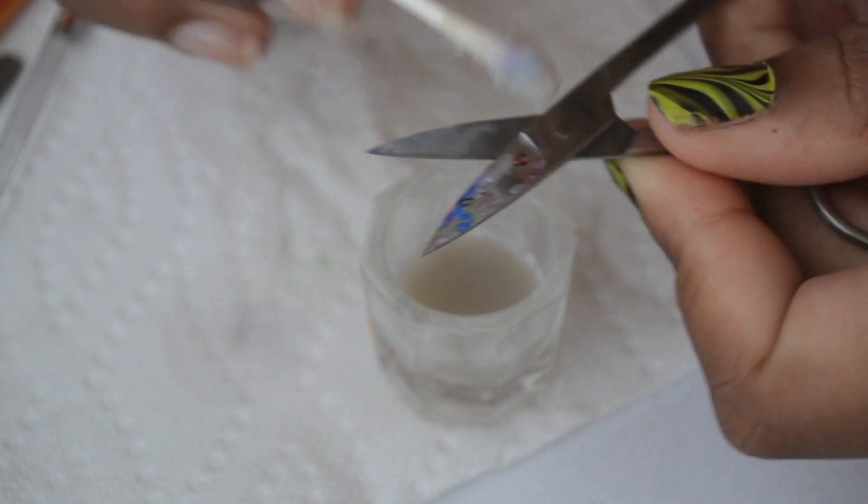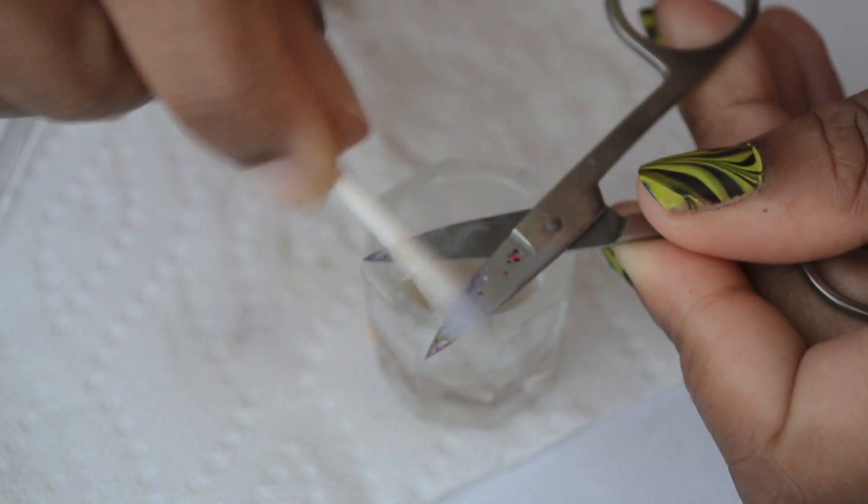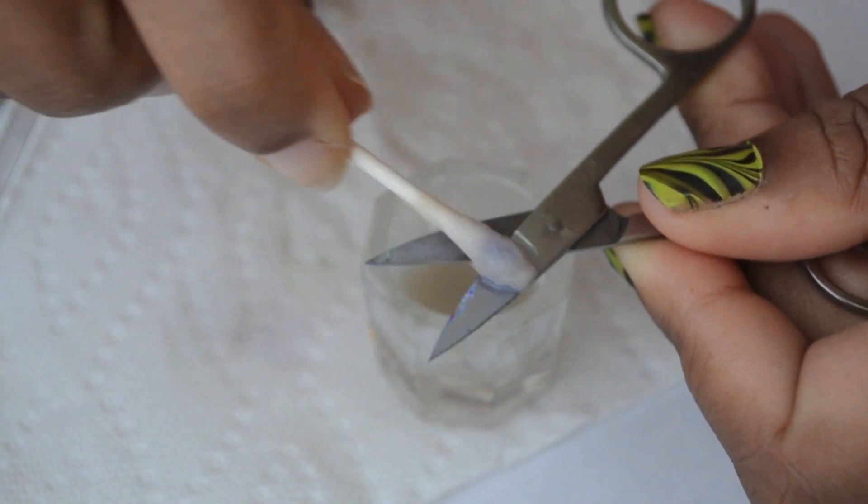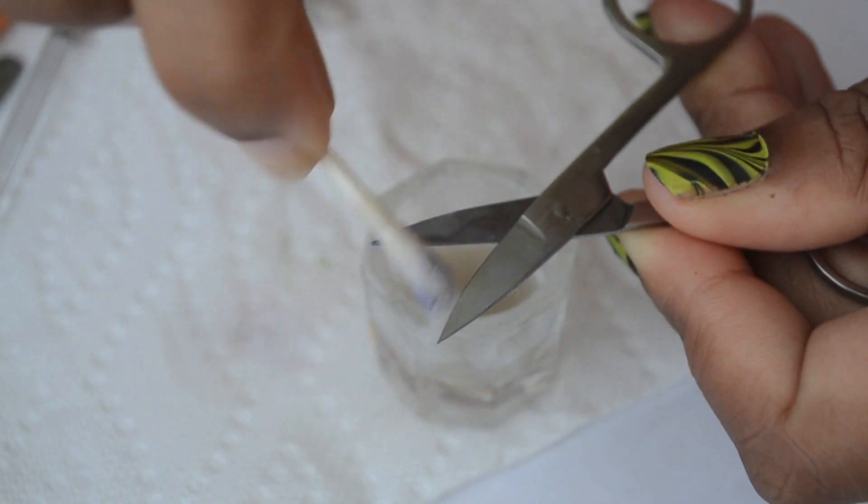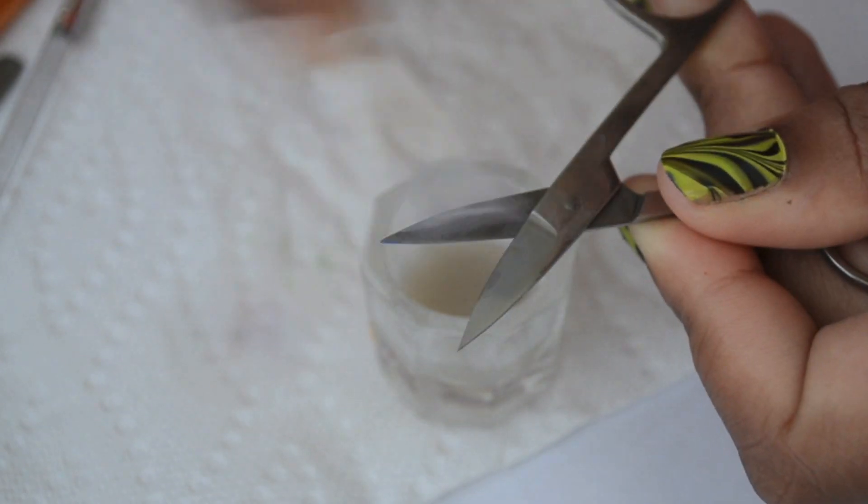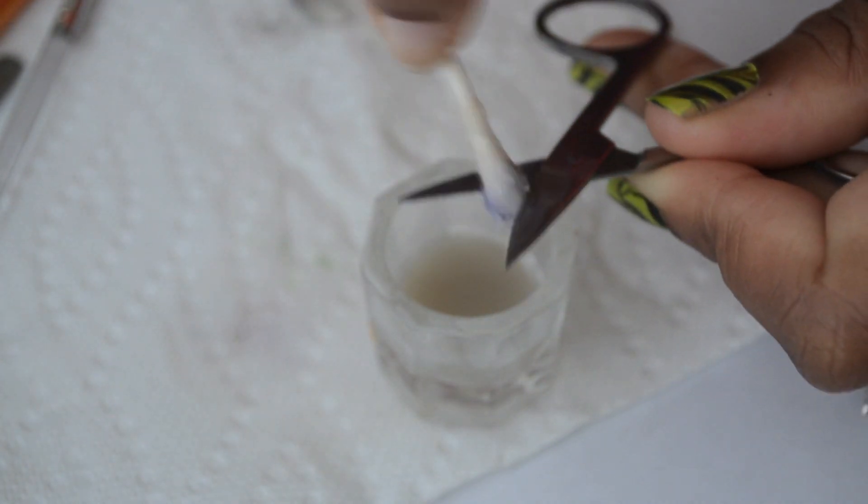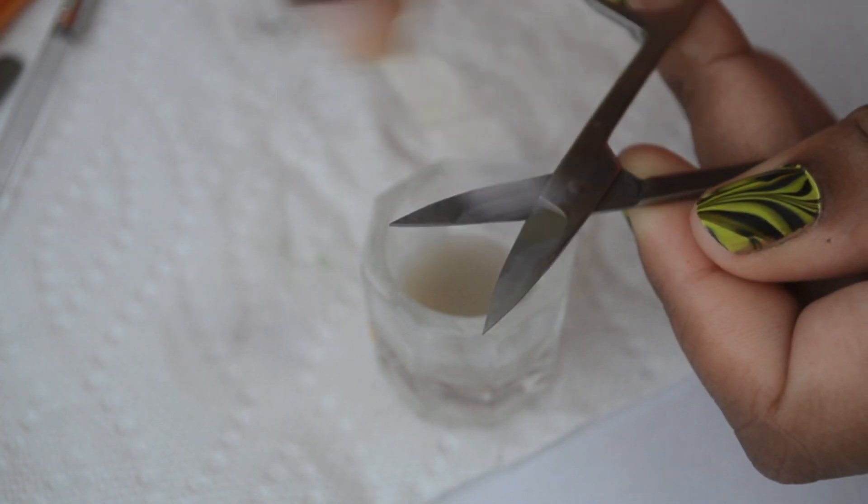For my tools, I take a q-tip dipped into the nail polish remover and wipe away the nail polish. If the nail polish seems to be stuck or too sticky on the tool,